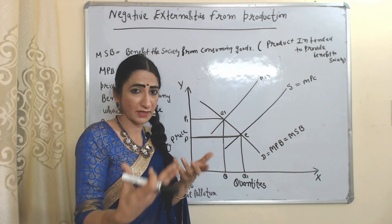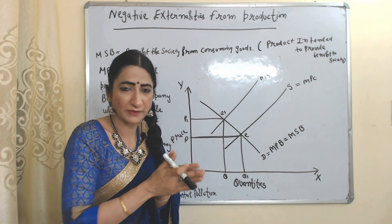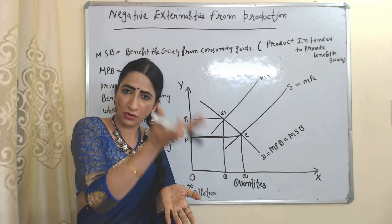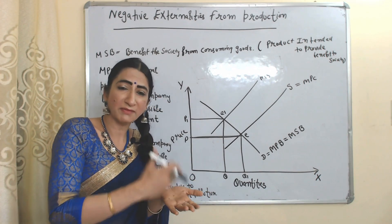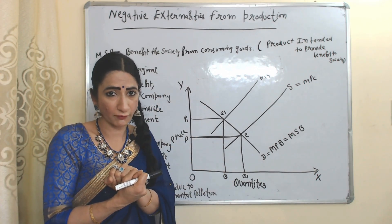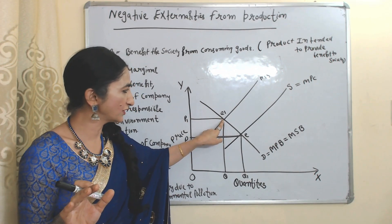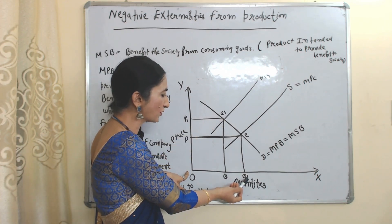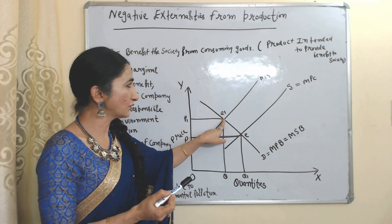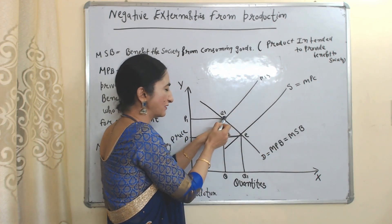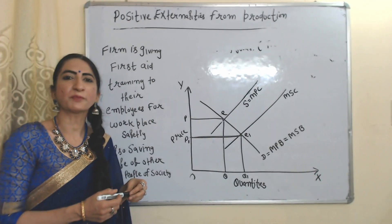That's why government intervention is a must. The government will impose taxes on the firm responsible for environmental pollution. As taxes are imposed, cost of the firm increases, prices increase, demand falls, and eventually production also falls. E1 is our new equilibrium point where production has reduced from Q1 to Q and prices have increased from P1 to P2. At E1, marginal social cost equals marginal social benefit, so E1 is the socially optimum equilibrium point.